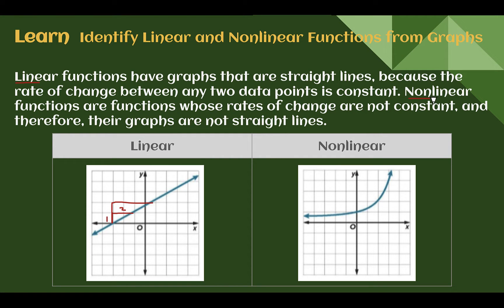A non-linear function has graphs whose rates of change are not constant — the graphs are not straight lines. For example, from one point to another the rate of change might be about one-sixth, but from another pair of points it might be one-half. It's not the same, so it is non-linear. Linear makes a straight line; non-linear does not.